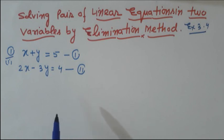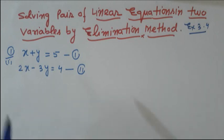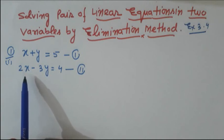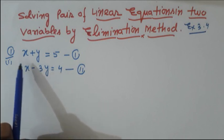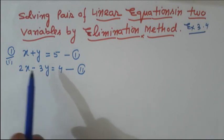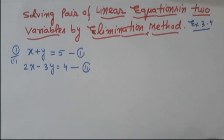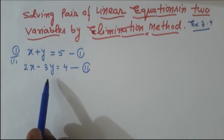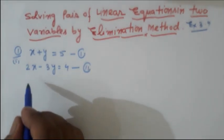We eliminate a variable by adding or subtracting the equations. For elimination, the coefficients of the chosen variable should be equal. The coefficient of x is 2 in the second equation but 1 in the first equation. If we want to eliminate x, we multiply the first equation by 2. If we want to eliminate y, we multiply the first equation by 3 so that the 3y terms cancel. Here I am going to eliminate y, so equation one will be multiplied by 3.